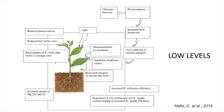The natural movement of potassium goes from old leaves to new leaves, so less potassium will be available to older leaves. This creates a difference in cation exchange capacity, where we will see an increase in the uptake of magnesium, sodium, and calcium. The plant will then start to regulate its root architecture, trying to take up more potassium because there is not enough.